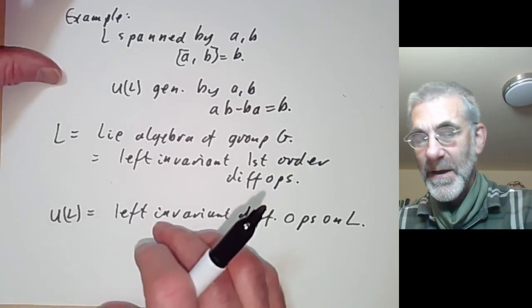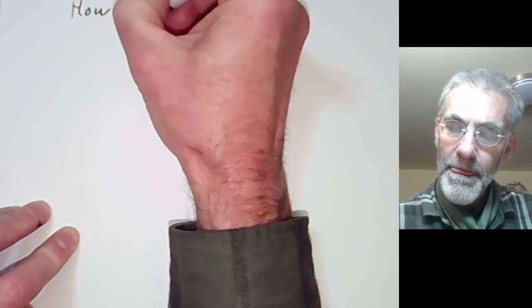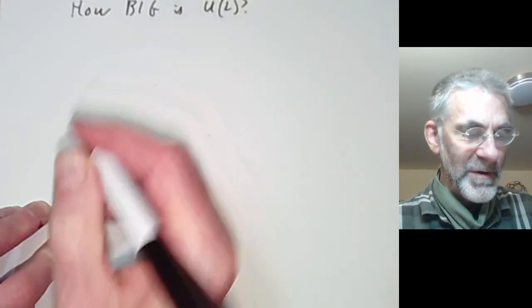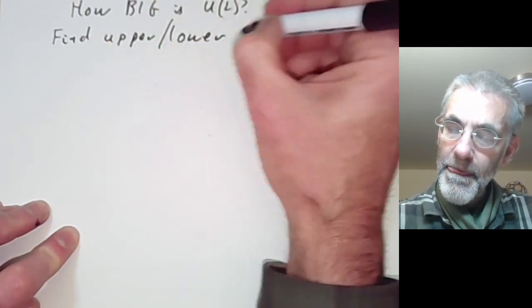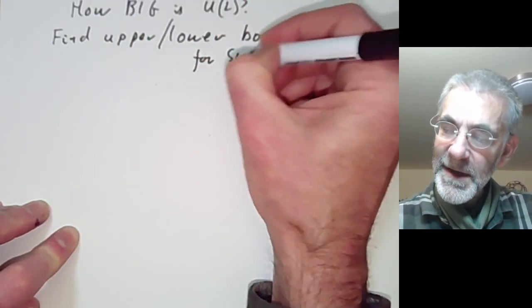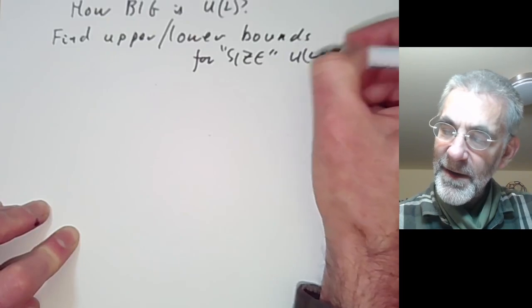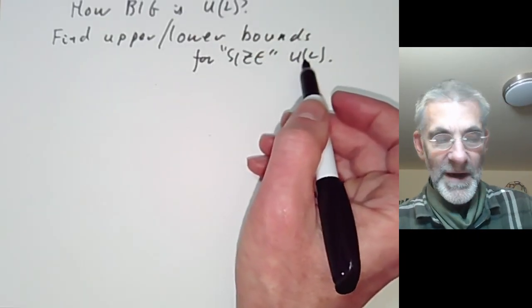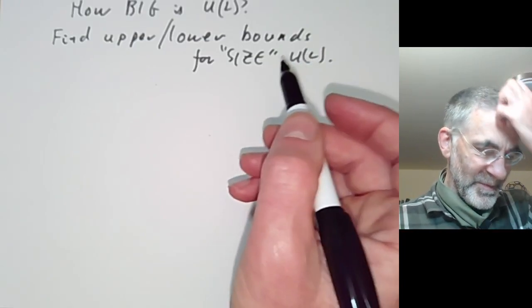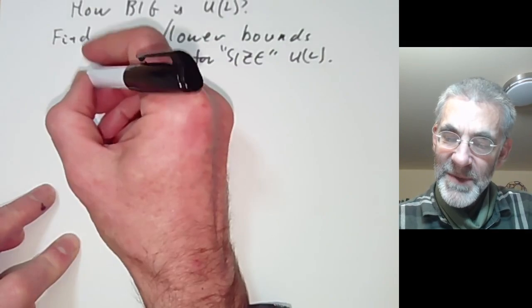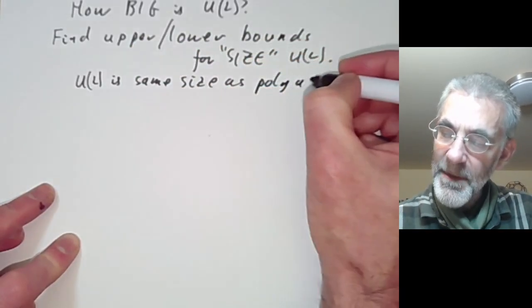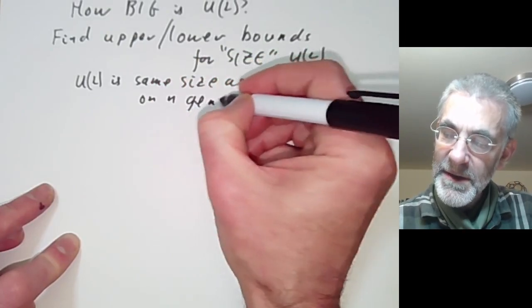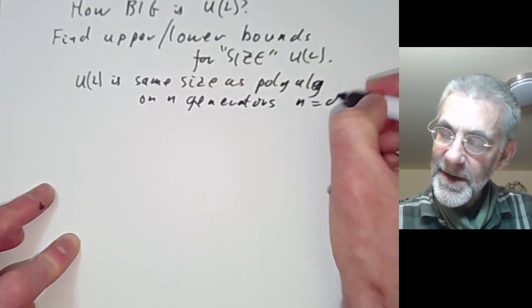A basic question is: how big is the universal enveloping algebra of L? It's kind of difficult to visualize U(L), so we want to find upper and lower bounds for its size. U(L) is an infinite-dimensional vector space, and what we want to show is that U(L) is the same size as a polynomial algebra on N generators, where N is the dimension of L.